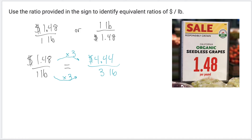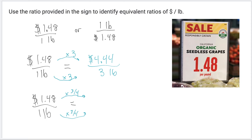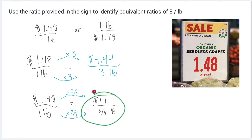Maybe you multiplied by 2 or by 5. Now maybe I want to buy three quarters of a pound, so I'll multiply by three quarters — also equivalent to 0.75. To keep the relationship, I multiply both numerator and denominator by the same scale factor. In the denominator, I get three quarters of a pound, or 0.75. And 1.48 times three quarters gives me $1.11. All of these ratios — $1.48 per pound, $4.44 per 3 pounds, $1.11 per three-quarters of a pound — are all equivalent. They all reduce to the same thing.